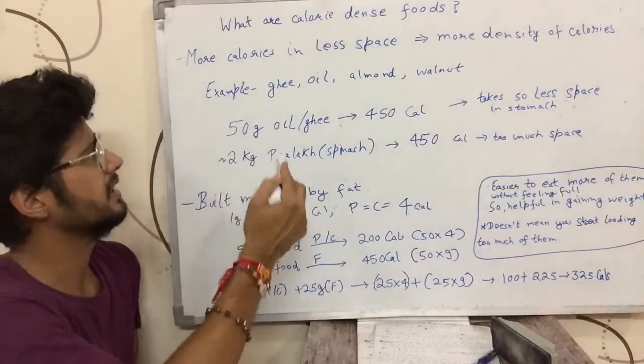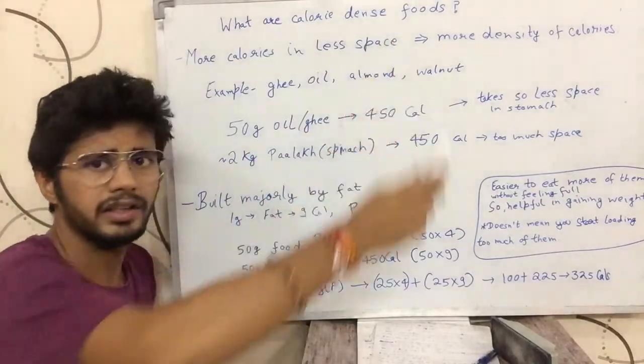The examples of calorie-dense foods are ghee, oil, almond, walnut, and cashews.